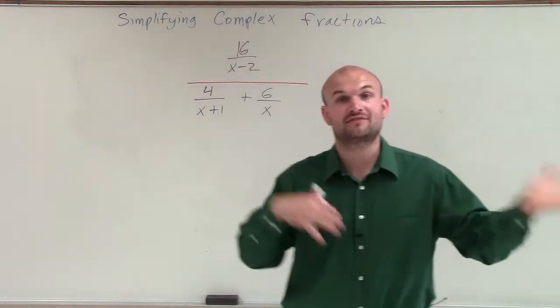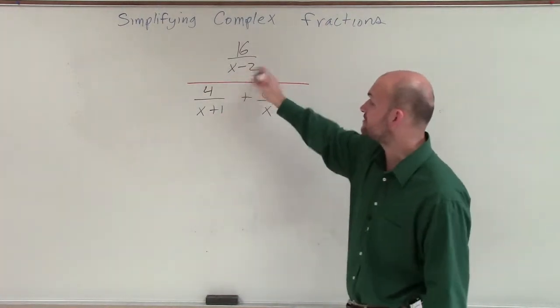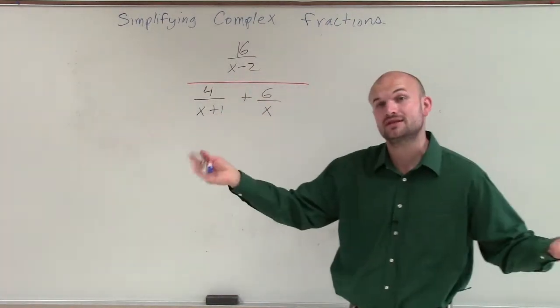Now, we could go ahead and multiply everything by your LCD. And notice our LCD would just be all of our denominators. So it would be (x-2)(x+1)x, and that would eliminate everything.